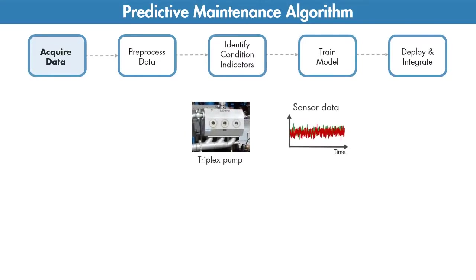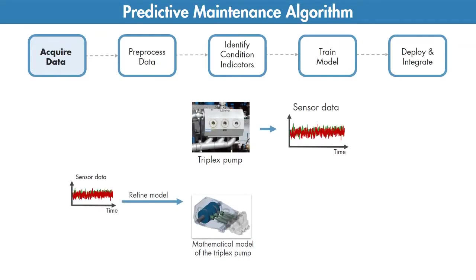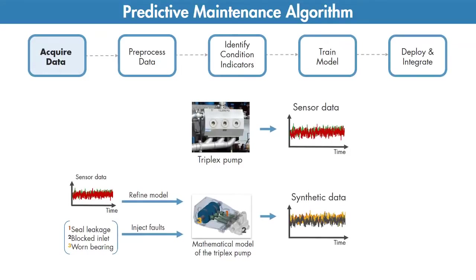In some cases you may not have enough data representing healthy and faulty operation. What you can do is build a mathematical model of the pump and estimate its parameters from sensor data. You can then simulate this model with different fault states under different operating conditions to generate failure data. Now if you have the generated data supplementing your sensor data, you can use a combination of both to develop your algorithm.